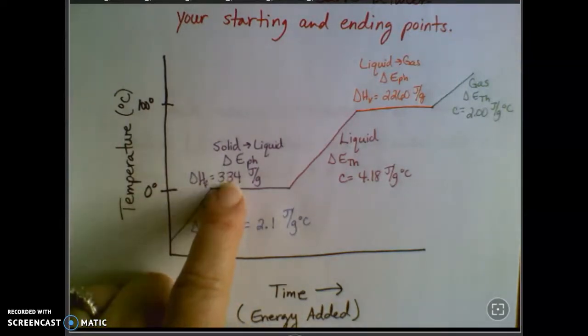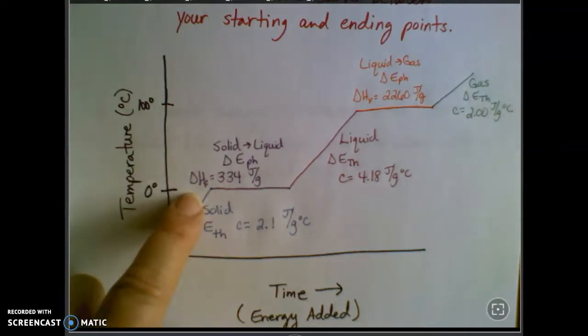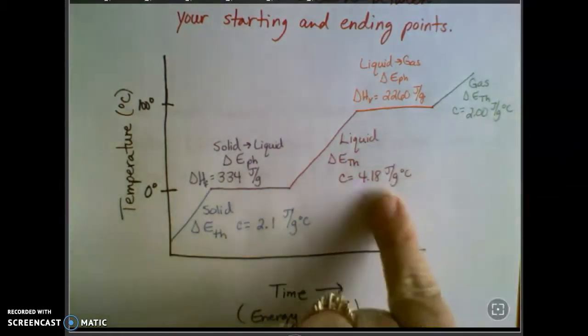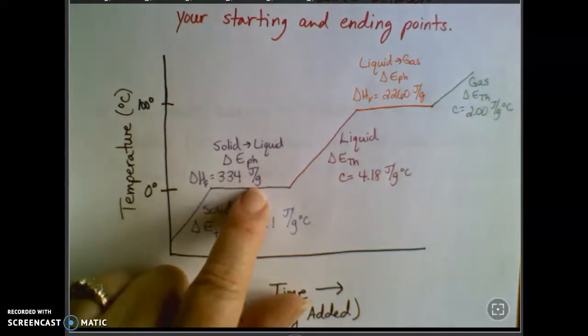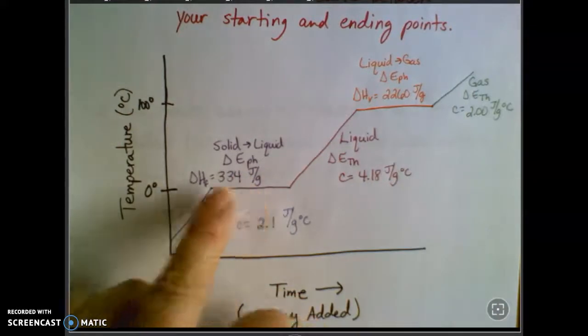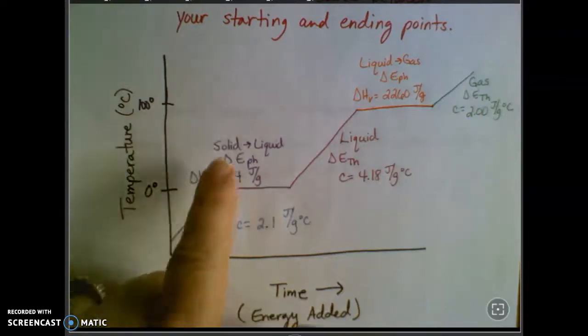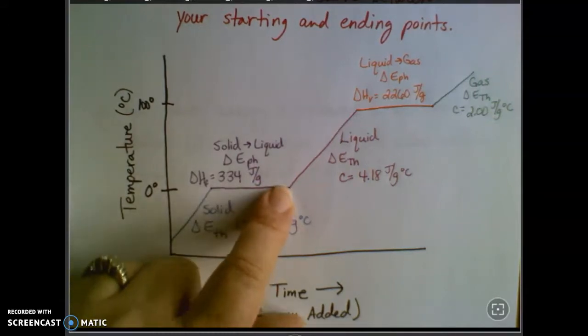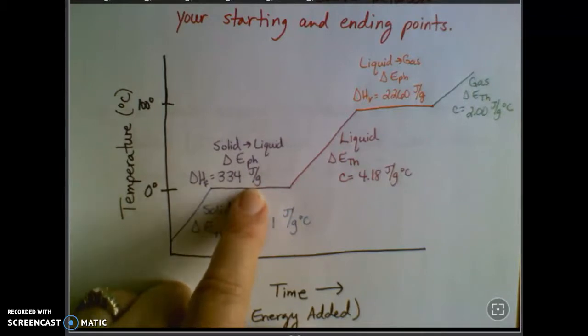So at this point, notice these units of measurement are a little bit different. When I have a slope, I have grams and degrees Celsius on the bottom. So these are temperature changes. But when I get to these flat parts, notice this is just the number of joules for every gram. The temperature is not changing during a phase change, so I don't have any temperature component of this constant. So what I find out here is it takes 334 joules for every gram of solid ice that, in this case, I'm melting, or it's going to release that if liquid ice is turning to solid.